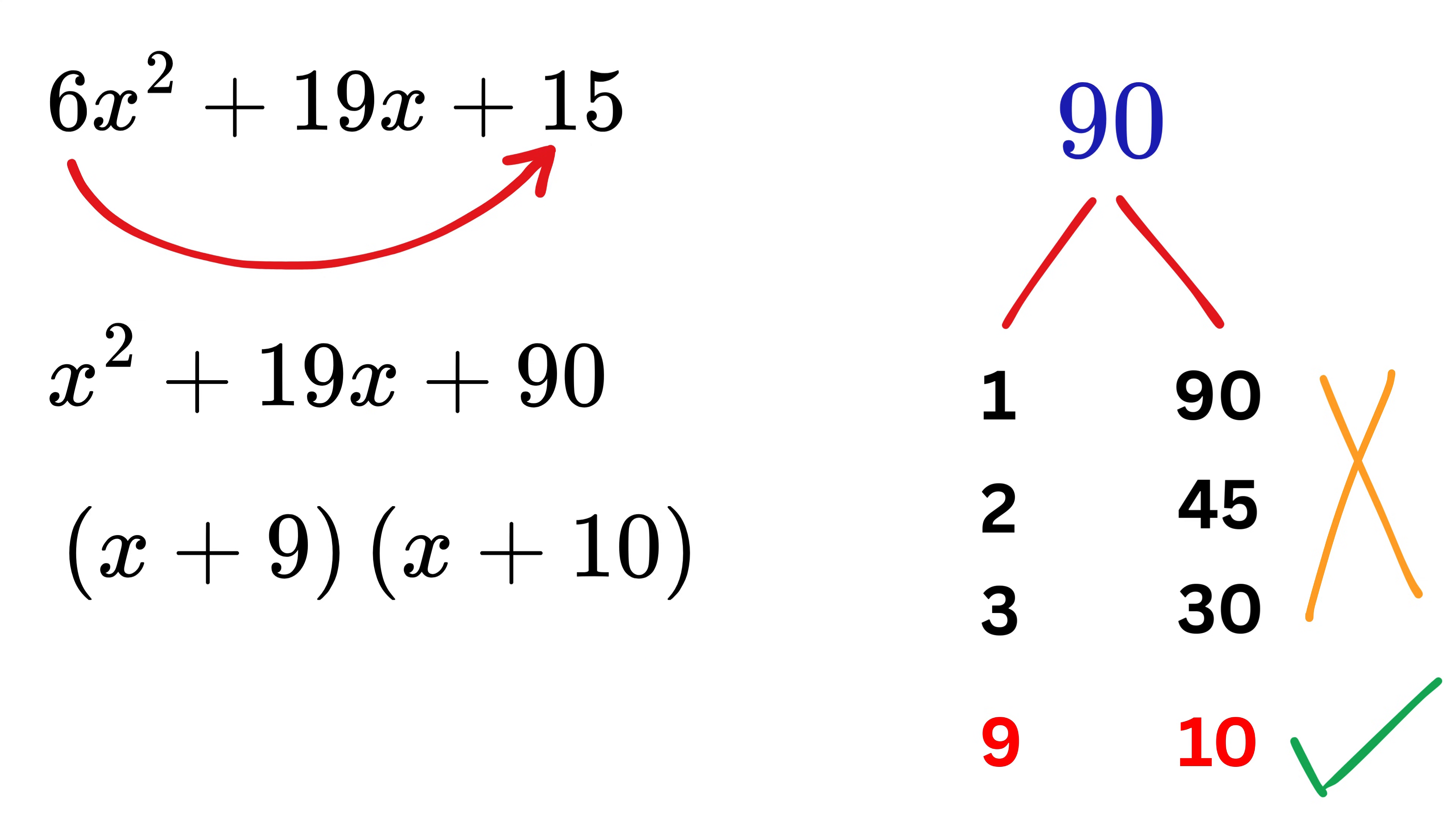In the next step, whatever is the coefficient of x squared, which is 6 here, write it in the denominator like this with 9 and 10. Reduce this fraction as much as possible. 9 divided by 6 reduces to 3 divided by 2.